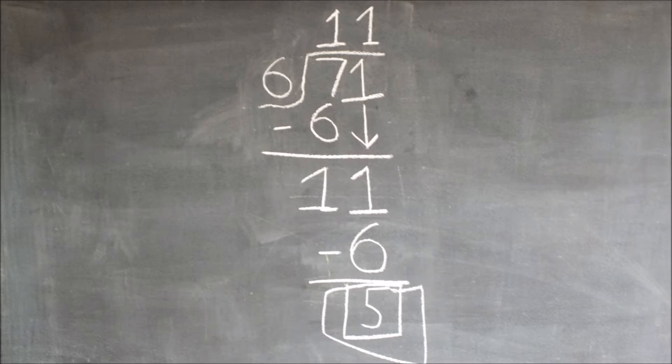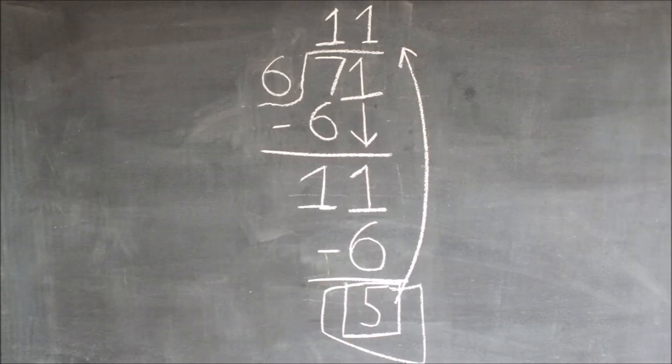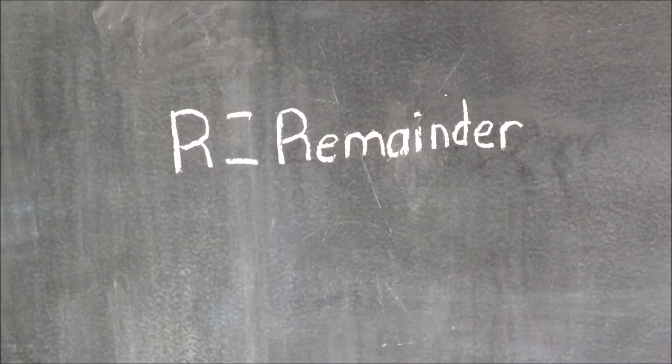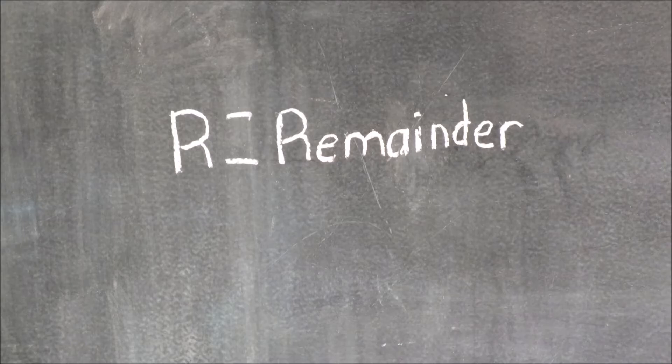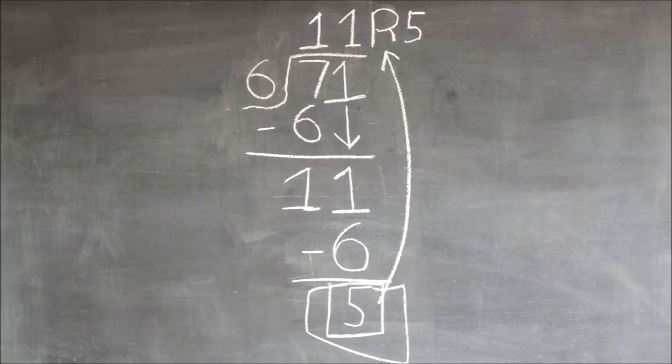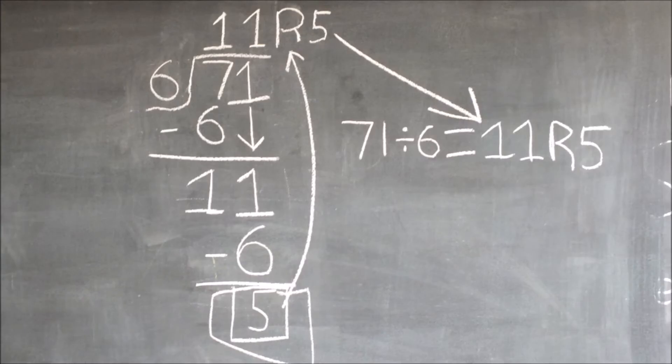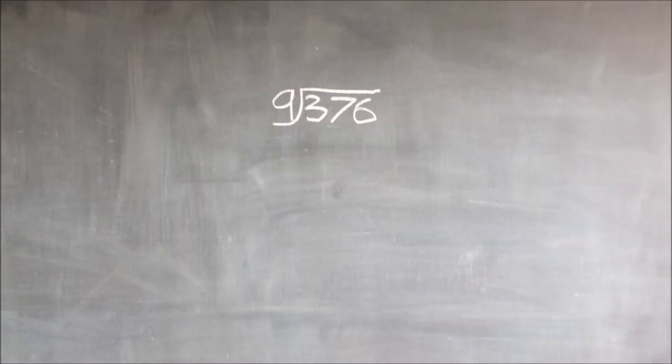Now we have five left over. What to do with it? This is where the process of using remainders comes in. We have to write the R beside the 11, and R equals remainder. We have written the R, and now we will have to bring up the five that was left over. So we can say 71 divided by six equals 11 with a remainder of five.